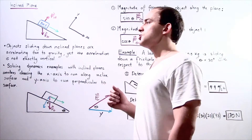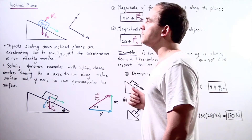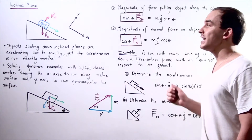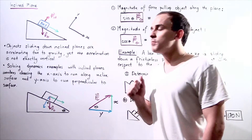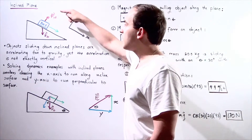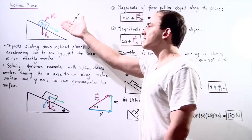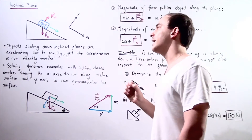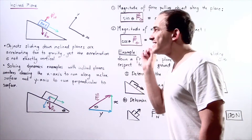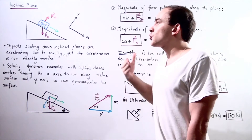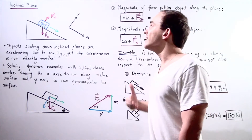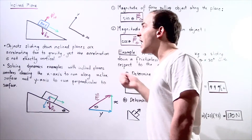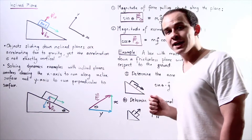Let's begin our discussion on inclined planes, also known as ramps or simply inclines. Suppose we have a box that is sliding down a frictionless inclined plane. What exactly is creating the motion? What is forcing the box to slide down our inclined plane?